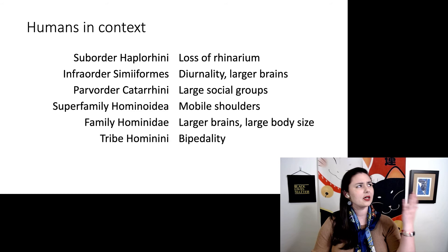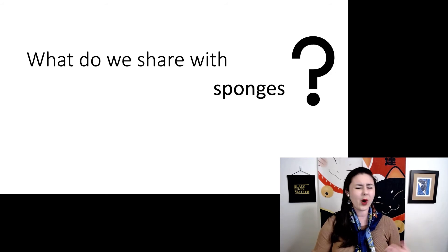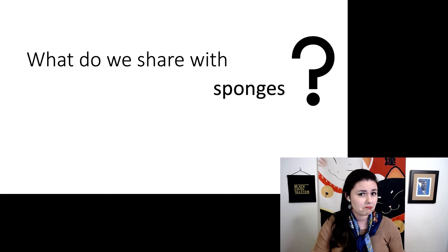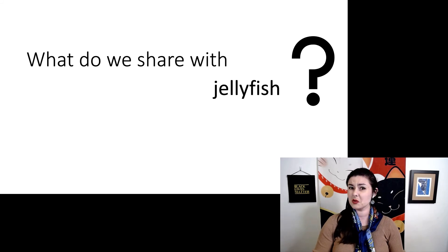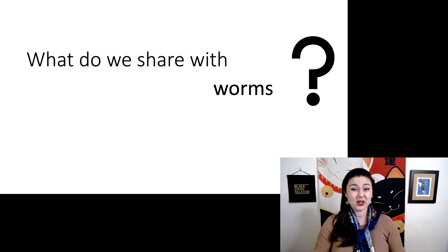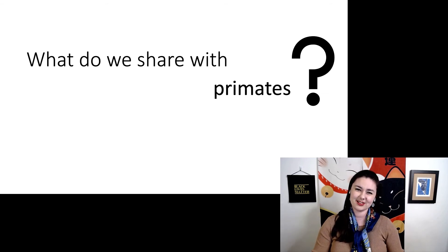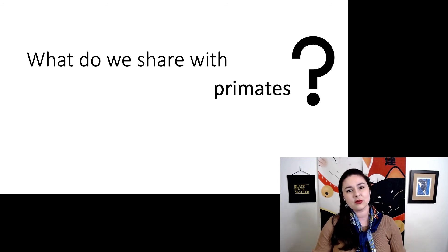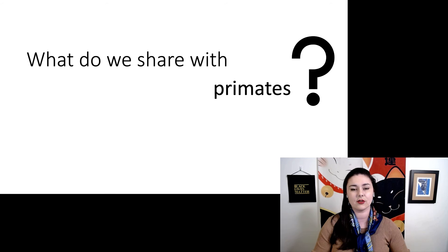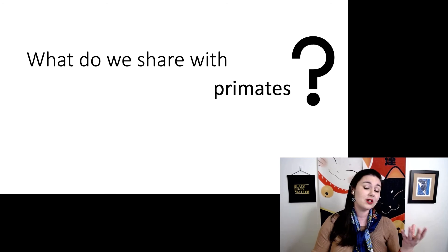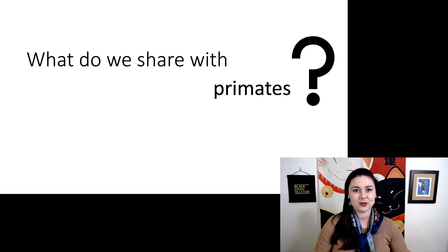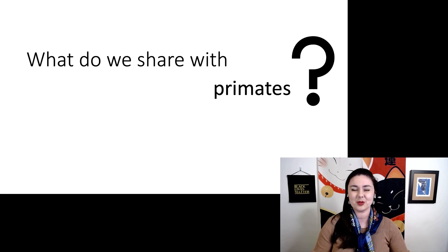Think back at all of the traits we talked about. What do we share with sponges? What do we share with jellyfish? What do we share with worms? What do we share with reptiles? And of course, what do we share with primates? If you can answer all of these questions, that will demonstrate a really good understanding of how we are related to these different groups of organisms — some are relatively distant relationships, and some are much more close. It really helps to remember and identify similarities between different groups of organisms.